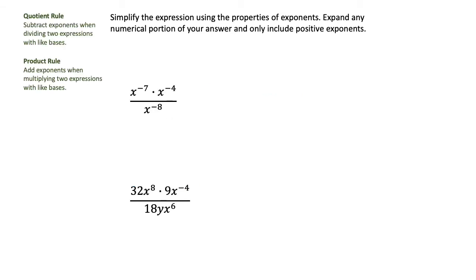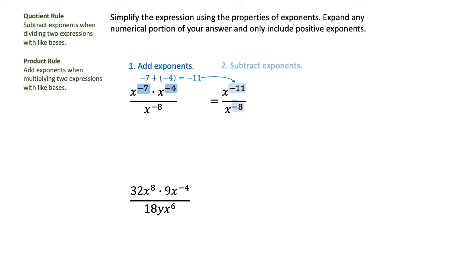In these expressions, I'm going to use the product rule in addition to the quotient rule. In the first expression, x to the negative 7 times x to the negative 4 — I can add those exponents: negative 7 plus negative 4 equals negative 11. So the new expression is x to the negative 11 over x to the negative 8. Then I subtract exponents, starting in the denominator: negative 8 minus negative 11 is the same as negative 8 plus 11, which is 3. I've eliminated x to the negative 11 in the numerator, so I put a placeholder of 1 up there. My final expression is 1 over x to the 3rd power.